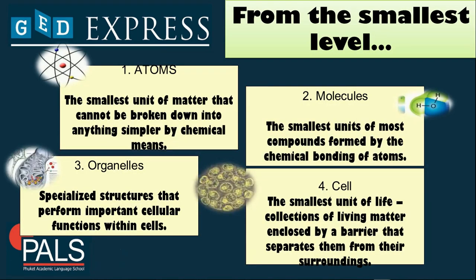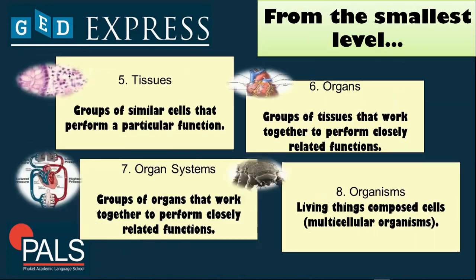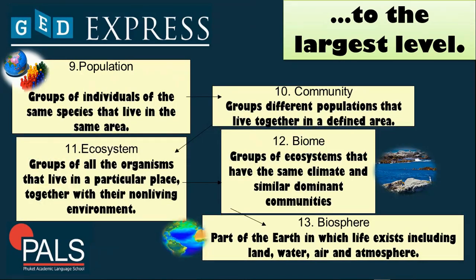An atom is the smallest unit of matter. An atom fused with another atom will give you a molecule, and a molecule makes up an organelle. A combination of organelles makes up a cell, and a cell combined with another cell will give you a tissue, and tissue combined with another tissue will form an organ. An organ combined with another organ will make up a system.